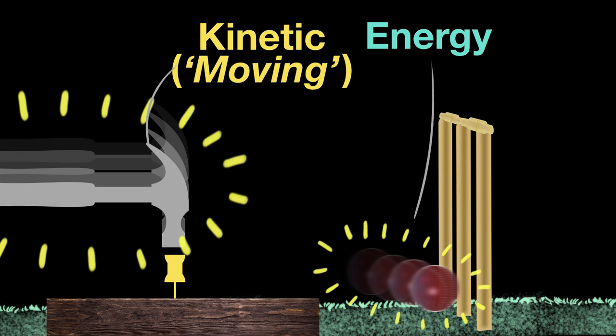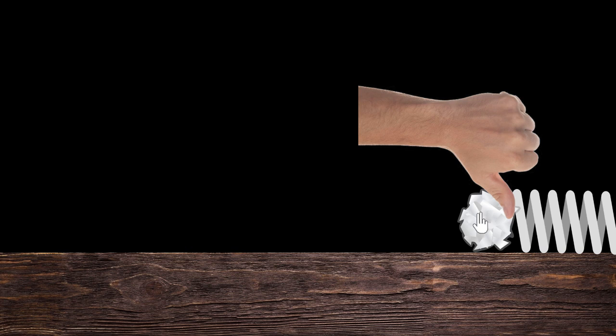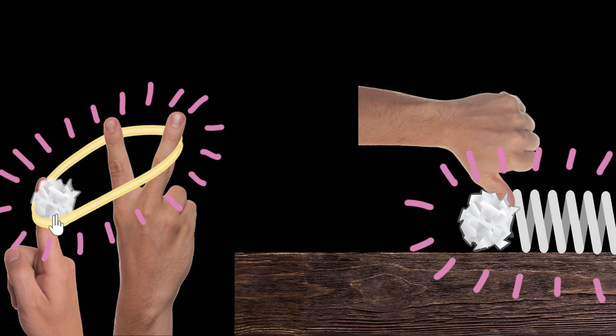We can also have energy without motion. Suppose we take a spring and compress it. If I keep a paper ball in front of it and let go, it can do work on that paper ball — it can push on that ball and make it move. That means this compressed spring has the capacity to do work; it has energy. Notice that the spring is not moving, yet it has energy. Similarly, a stretched rubber band should also have energy, because it can shoot a paper ball and do work on it.